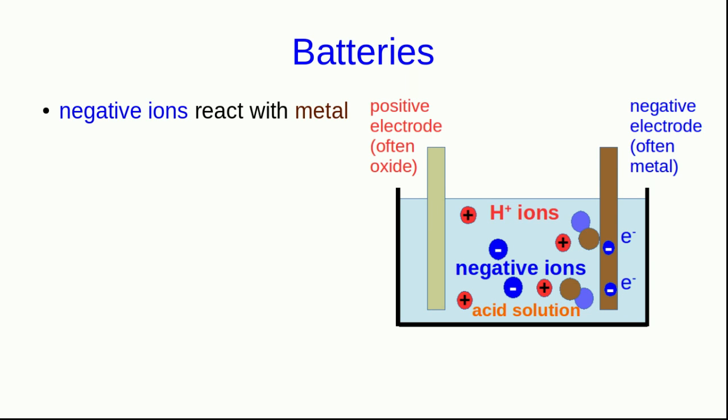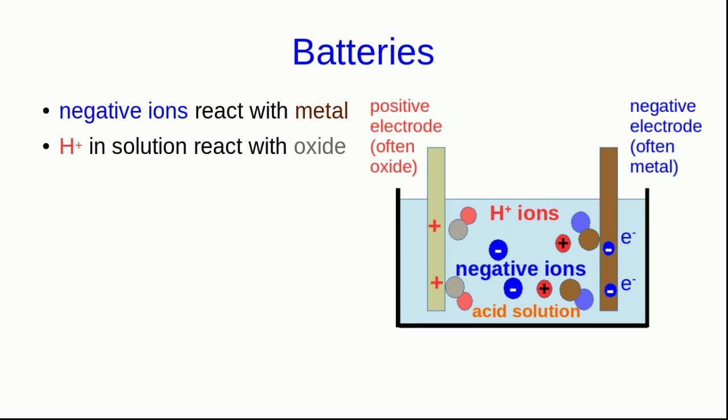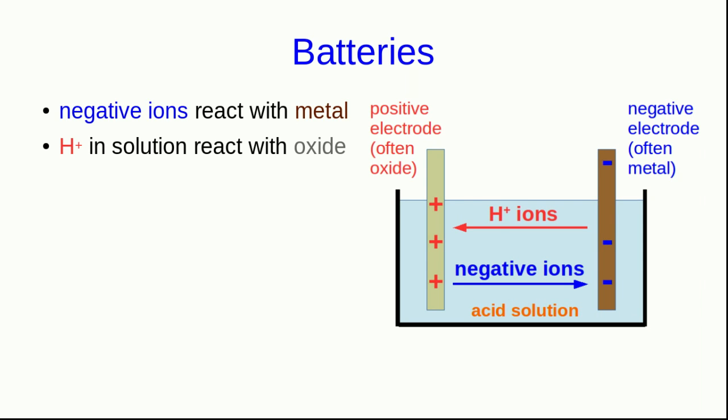At the same time, the hydrogen ions react with the oxide, and in doing so, they transport positive charge. So the oxide or positive electrode ends up positively charged. Now there's a depletion of hydrogen ions near the positive electrode and a depletion of negative ions near the negative electrode.